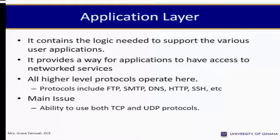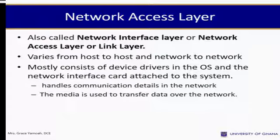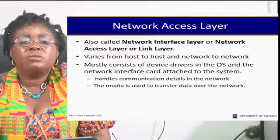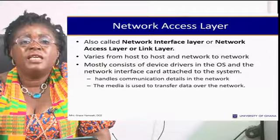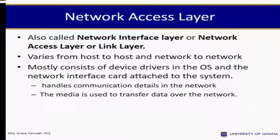The application layer contains the logic needed to support various user applications and provides a way for applications to access network services. All higher-level protocols operate here, including FTP, SMTP, DNS, HTTP, and SSH. The main issue at this layer is the ability to use both TCP and UDP protocols. The network access layer (also called network interface layer or link layer) varies from host to host and network to network, mostly consisting of device drivers in the OS and the network interface card. It handles communication details and the medium used to transfer data over the network.